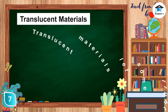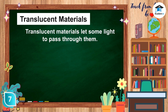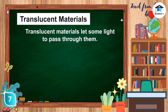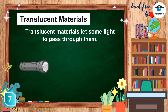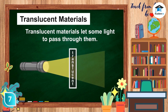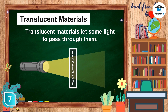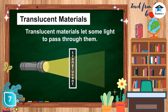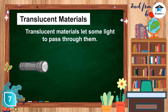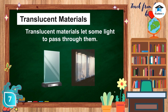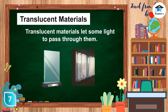Translucent Materials. Translucent materials let some light pass through them. When light strikes a translucent material, only some of it passes through the material. That is why when you look through a translucent material, the objects behind it look blurry or unclear. Frosted glass, stained glass, and wax paper are examples of translucent materials.